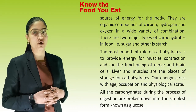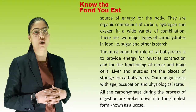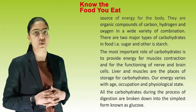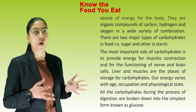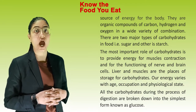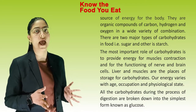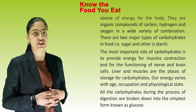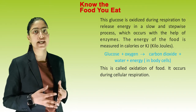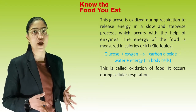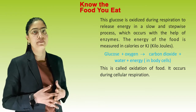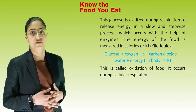The most important role of carbohydrates is to provide energy for muscle contractions and for the functioning of nerve and brain cells. Liver and muscles are the places of storage for carbohydrates. Our energy varies with age, occupation and physiological state. All carbohydrates during the process of digestion are broken down into the simplest form known as glucose. This glucose is oxidized during respiration to release energy in a slow and stepwise process with the help of enzymes. The energy of food is measured in calories or kilojoules (kJ).